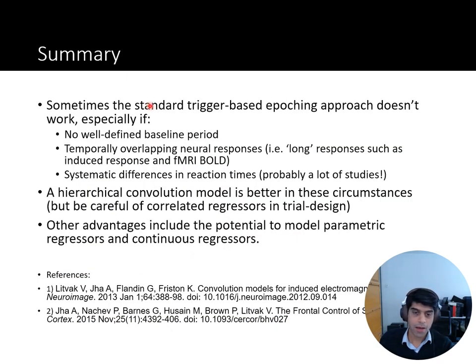So in summary, I've talked about when we can use the convolutional approach, so when the standard trigger-based epoching approach doesn't work. This is especially the case if there's no particular baseline or it's hard to get a baseline to correct against, when we have induced responses which are quite long, in the same case as in fMRI, the BOLD response is quite long and therefore overlapping and we need to disentangle them, and when we're comparing conditions which have differences in reaction times or motor responses. We tend to use a hierarchical convolutional model where we analyze it at the subject level, then take it to the group level, as in other times in SPM. And there's also the potential, for example, to include a parametric regressor, so a regressor that varies through the whole time period and is not event locked. And these are two papers that I've been quoting from through the talk. Thanks so much for your attention.